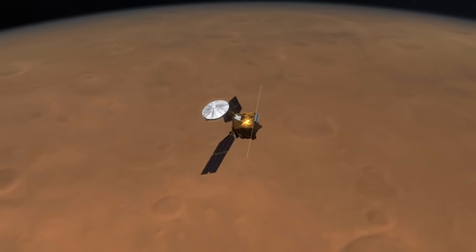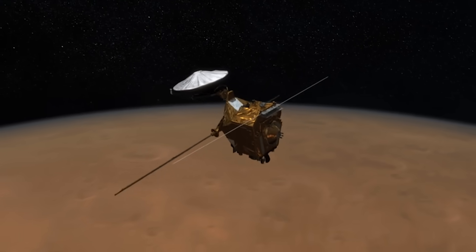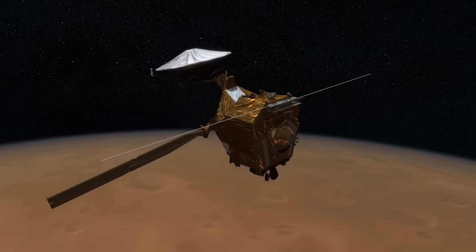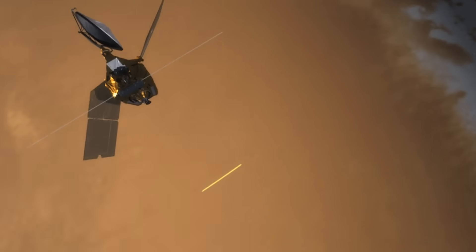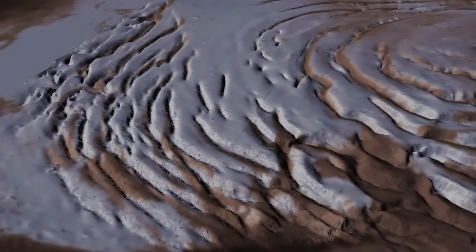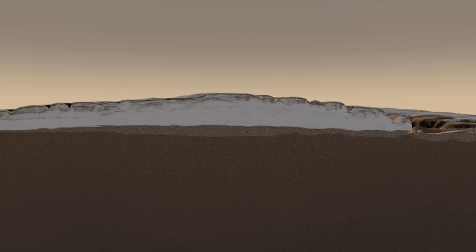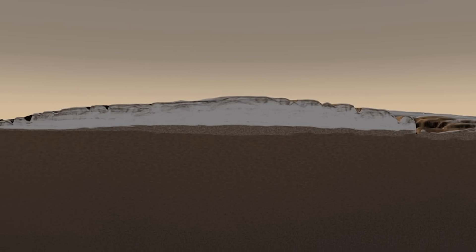The Mars Reconnaissance Orbiter attempted something bolder. Using its high-resolution HiRISE camera, engineers pushed the limits of tracking, hoping to isolate the faint dot of the nucleus buried in the glow. Processed images showed irregular shapes, patches of brightness, and shadows that suggested a scar. While confirmation would take weeks of refinement, the early frames looked like a wound carved across the surface of the interstellar traveler.